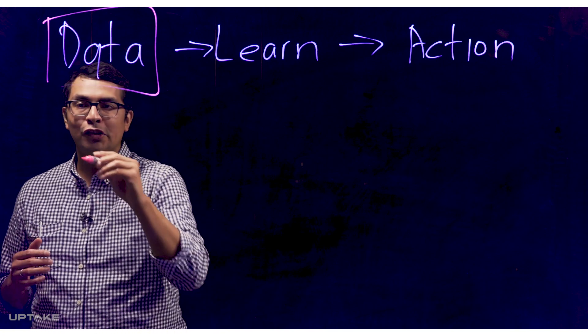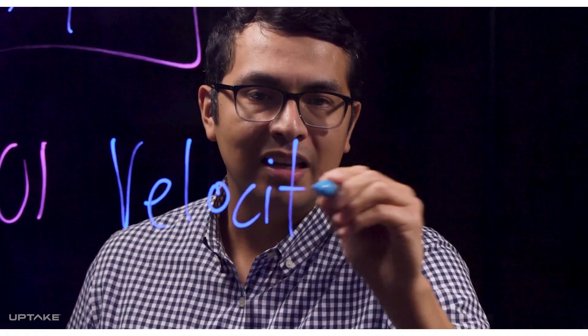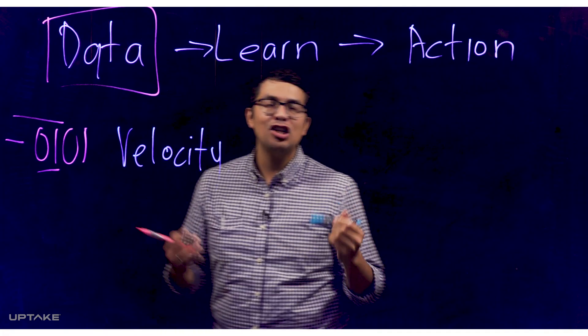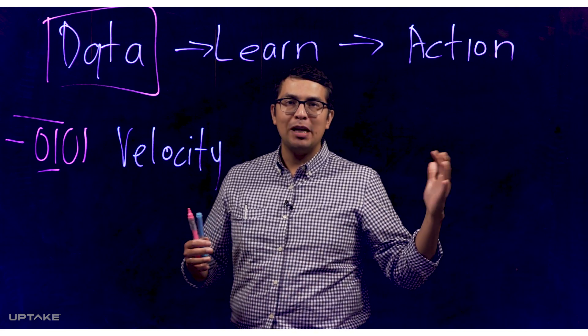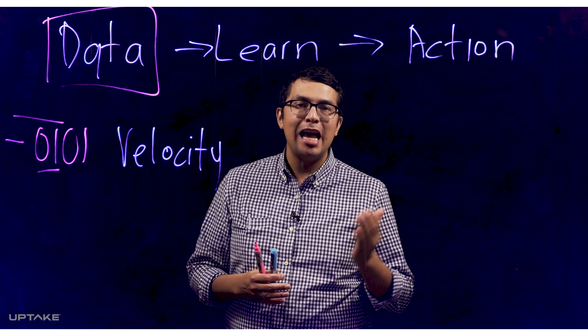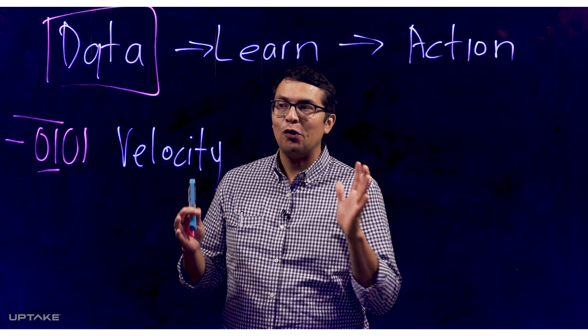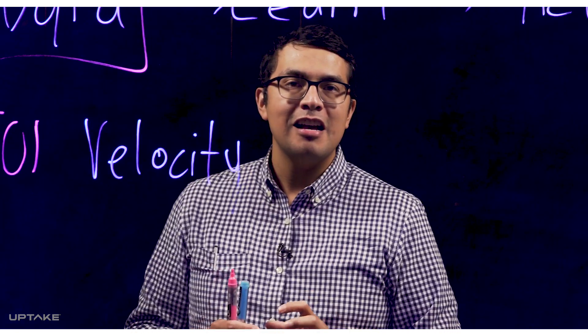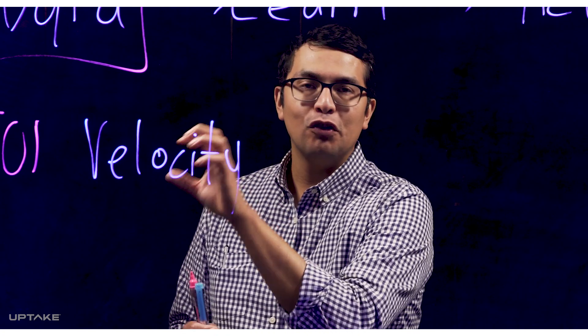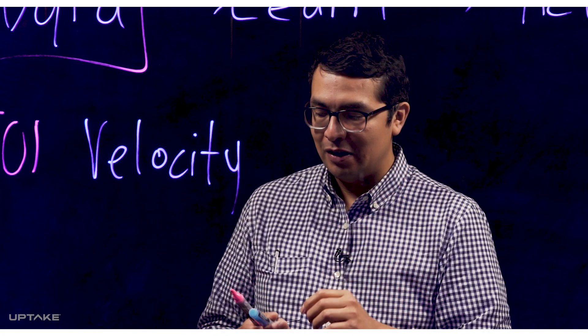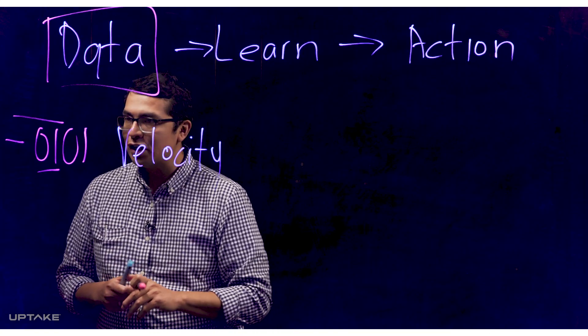A couple of things we're going to consider: first is the velocity of data. This is absolutely key. We might have 800 sensors on an asset, and those sensors might be reporting out metrics at 15, 10, or 5 minute intervals — so that data is coming at you really fast. We need to have the infrastructure to handle the velocity of data feeding into our data science models.